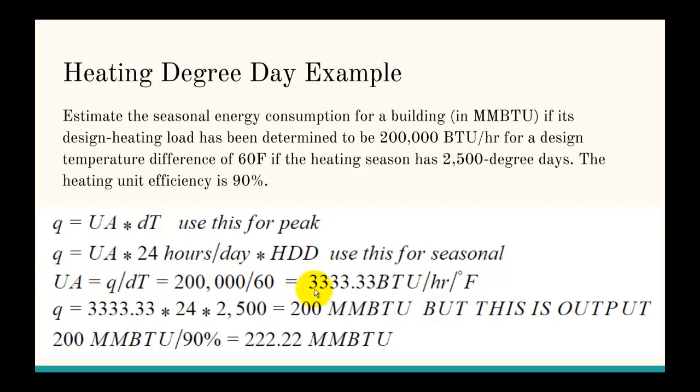UA is about 3,333 BTUs per hour per degree Fahrenheit. We can use the second equation to get the heating needs for the season. There's our UA, there's the 24 hours a day, and there's the heating degree days.